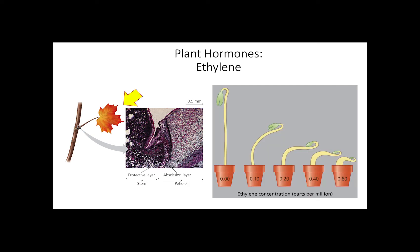Ethylene is also responsible for a triple response, which involves slowing of stem elongation, stem thickening, and horizontal stem growth. This is especially important during germination as plants may encounter obstacles when emerging from the ground, so the triple response allows them to avoid obstacles and resume vertical growth.